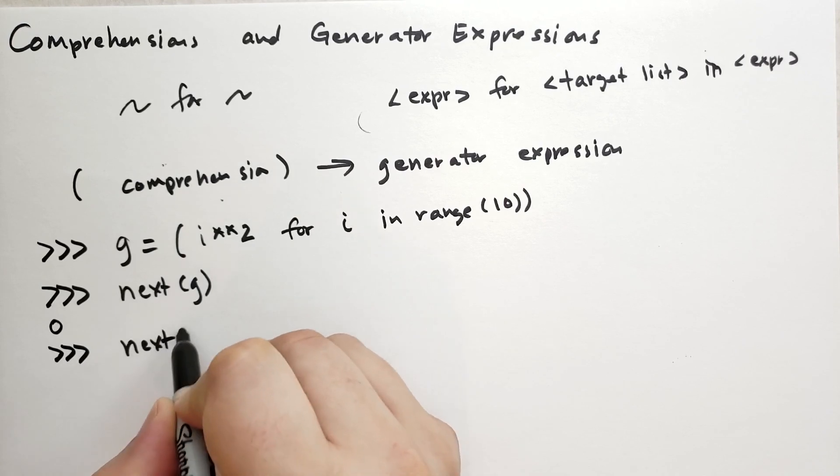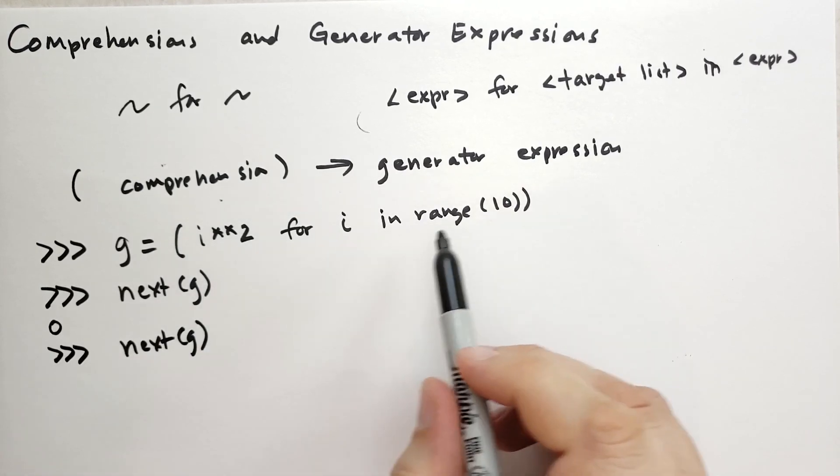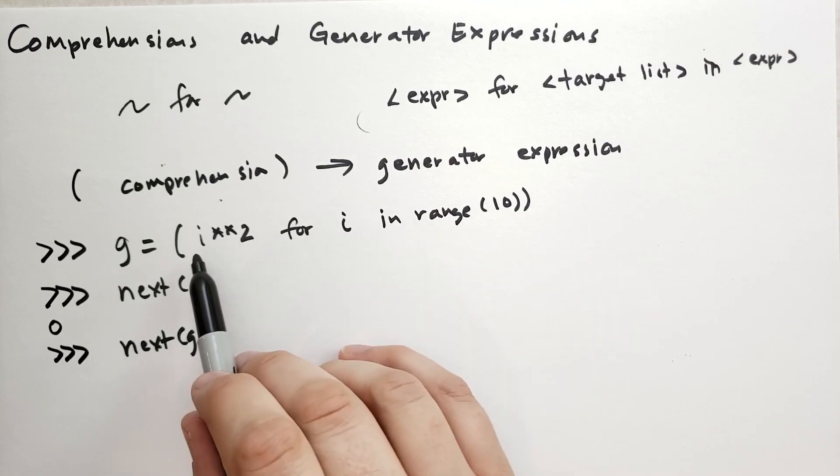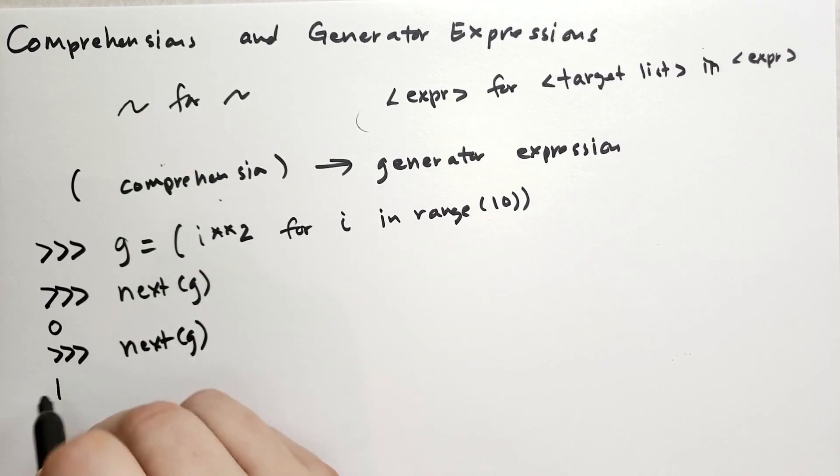If we call it again, then we're going to get the next item in the sequence, which is 1, assign that to i, and then take i and bring that to the second power. That's going to give us 1.